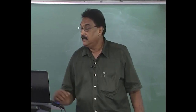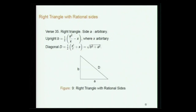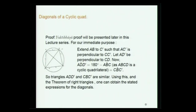In this lecture series, the Yuktibhasha proof will be presented in detail, but for our immediate purpose we will use the modern approach. You have cyclic quadrilateral ABCD. What you do is extend AB to C' such that CC' is perpendicular to ABC'. Similarly, drop the perpendicular AD to D' on the side CD. Then angle ADD' equals 180° minus the opposite angle, since it is a cyclic quadrilateral, and that equals angle CBC'.